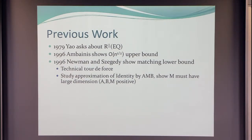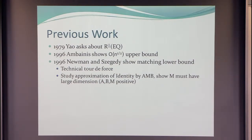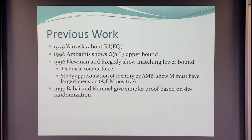The Newman-Segedy proof goes like this: you try to approximate, in the infinity norm, the identity matrix by a product of three non-negative matrices A, M, and B, where A is 2^n × m, M is m × m, and B is m × 2^n, and you want to show what is the smallest m you can have. It looks like a difficult question, and it's really a tough proof. A little time later, Baba and Kimmel gave a much simpler proof based on de-randomization — they boost one of the messages so that the error goes down, and then you can essentially replace it by a deterministic message.